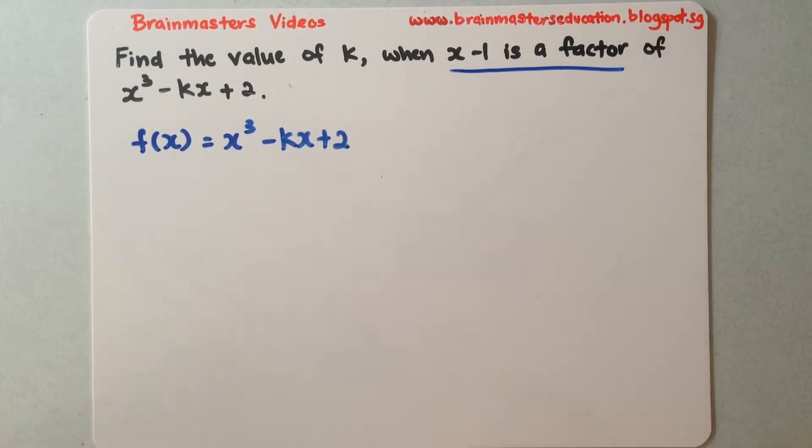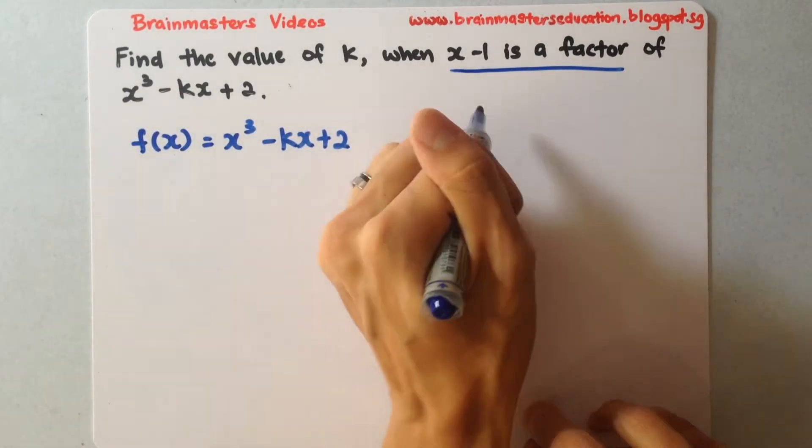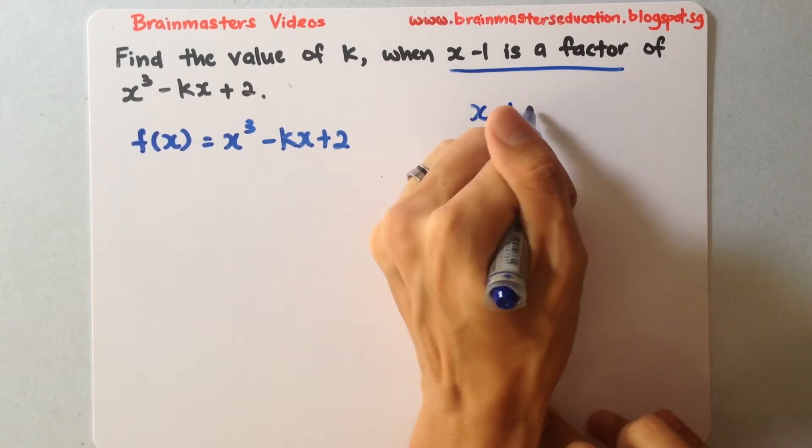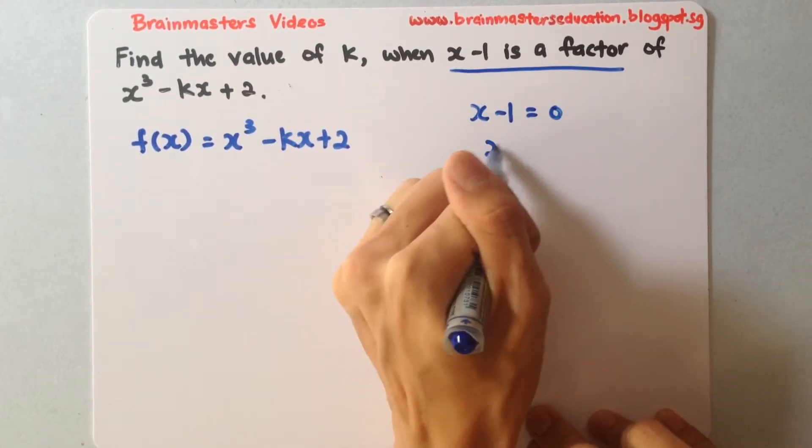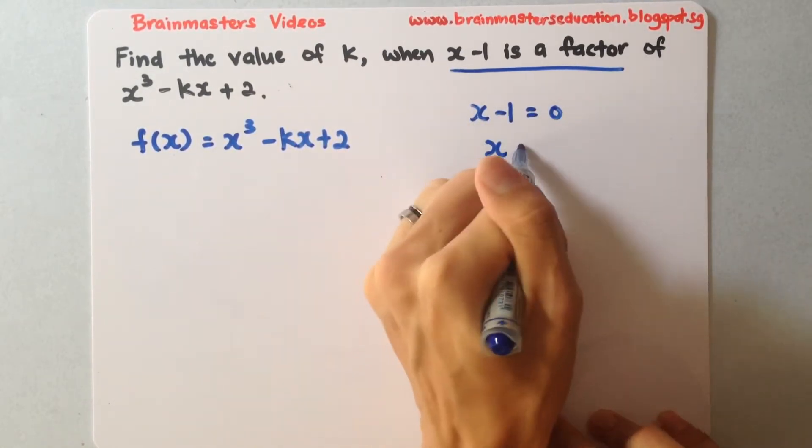So how do we get the working out? So first I will let x minus 1 equals to 0. So that I will know that when I bring this minus 1 over, it becomes x equals to 1.